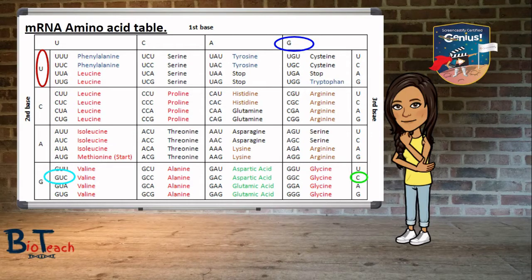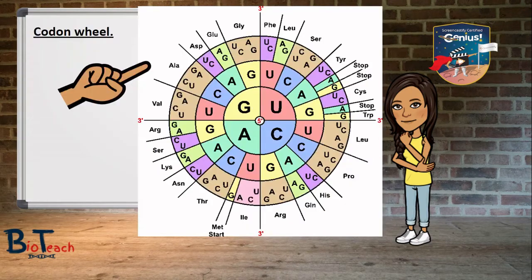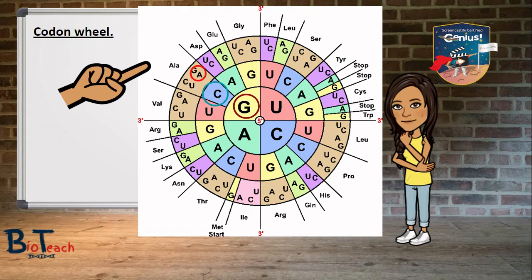You might want to pause the video at this stage to work out a few practice ones yourself. When I teach this to my students, a few of them often get confused with the table format, so I also provide something known as a codon wheel. You start off in the centre and work your way outwards to identify the amino acid for your codon. Let's say you have the first base as G, the second as C, and the last as A — this would give you the amino acid alanine.